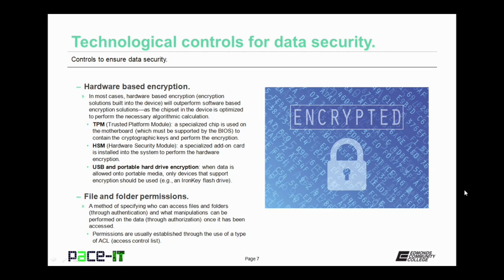File and folder permissions are another type of technological control. They're a method for specifying who can access files and folders, through authentication, and what manipulations can be performed on the data, through authorization, once it has been accessed. Permissions are usually established through the use of a type of access control list, or ACL.